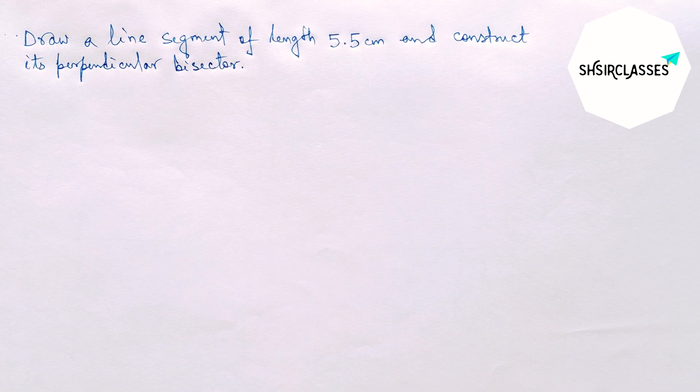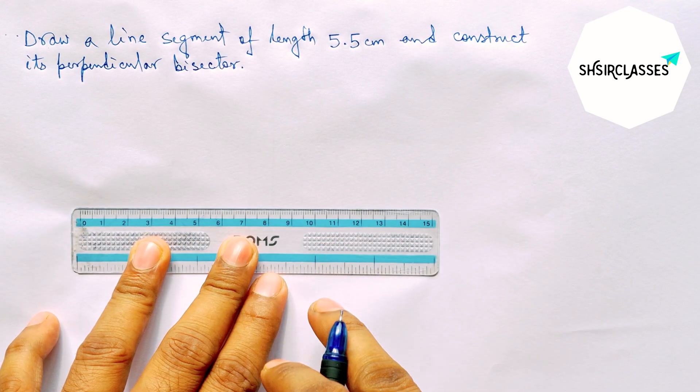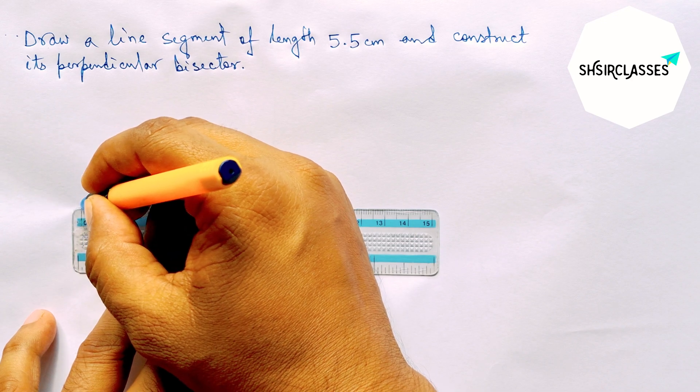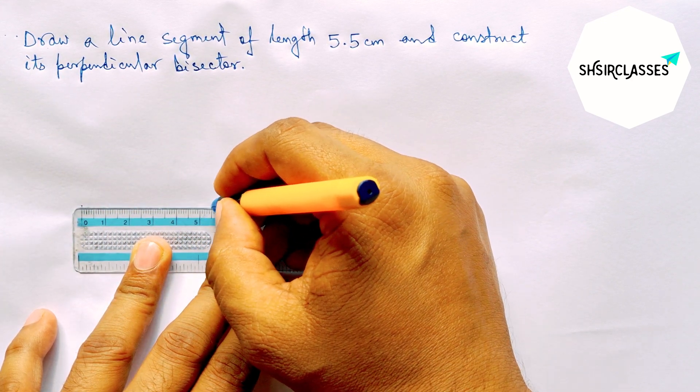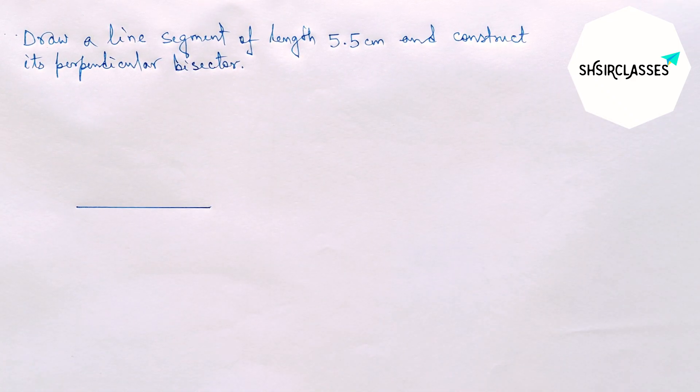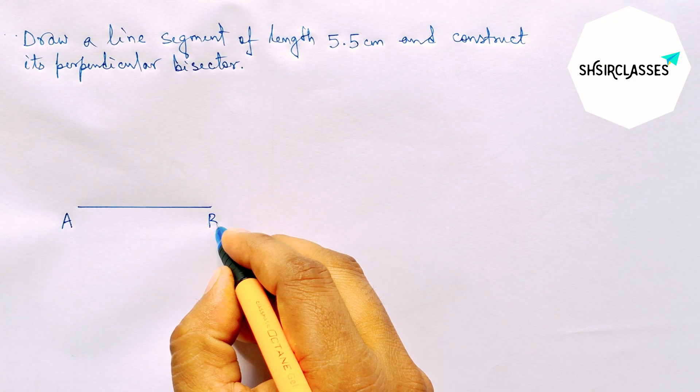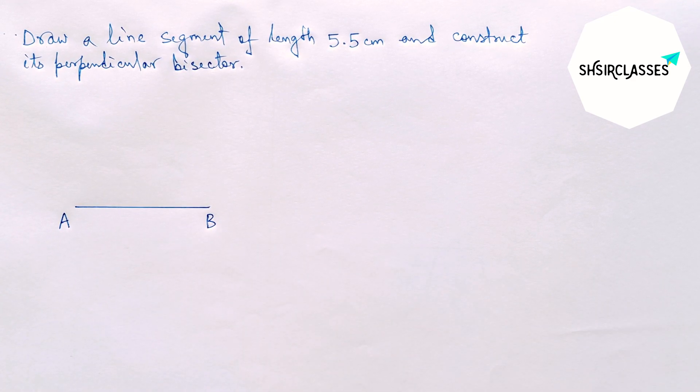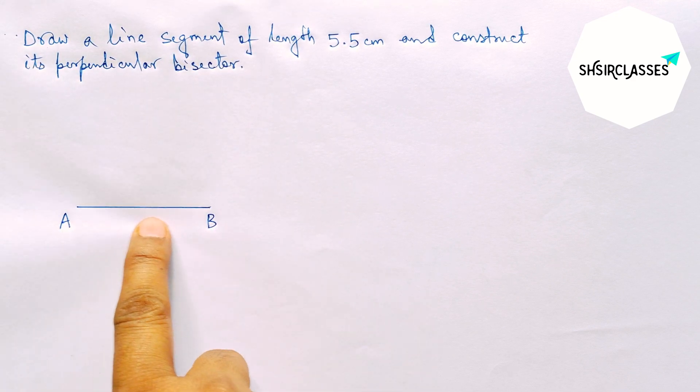So let's start the video. First of all, let us draw here a line segment of length 5.5 centimeter. So this is a 5.5 centimeter line segment. Next, labeling here point A and here B. Next, construct its perpendicular bisector to this line.